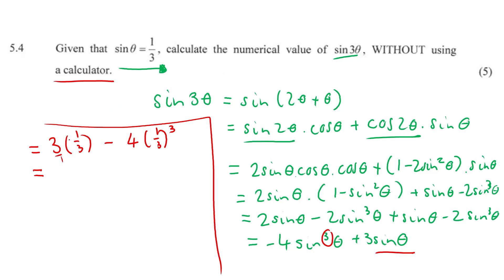So 3 times a third. So that's 3 over 1 times 1 over 3. The 3s would cancel. The 1s would cancel. And we're just left with 1 minus. Well, that's going to be 4 into a third cubed. That's going to be 1 cubed is just 1. 3 cubed is 27. So that's going to be 1 minus 4 times 1 is going to be 4 over the 27. 1 minus 4 over 27. So that's basically 27 over 27 minus 4 over 27. So 27 minus 4 is equal to 23 over the 27. So without using a calculator at all, just some mental maths. And that is question 5.4.